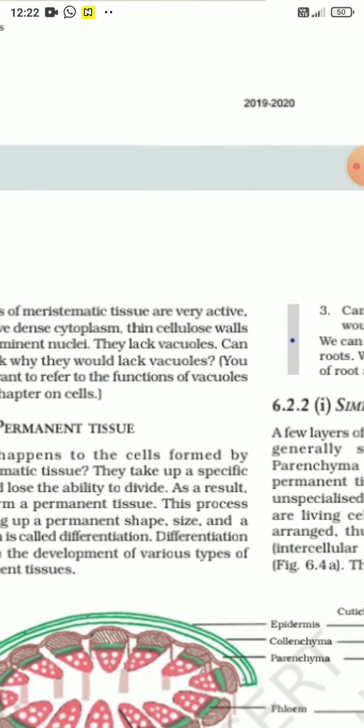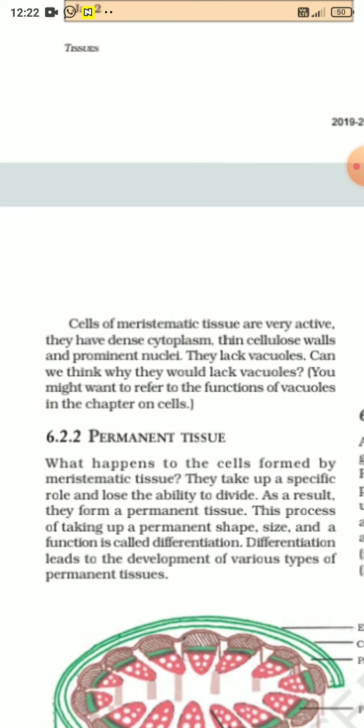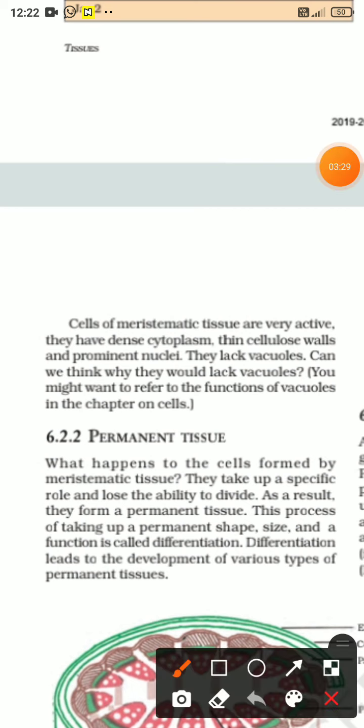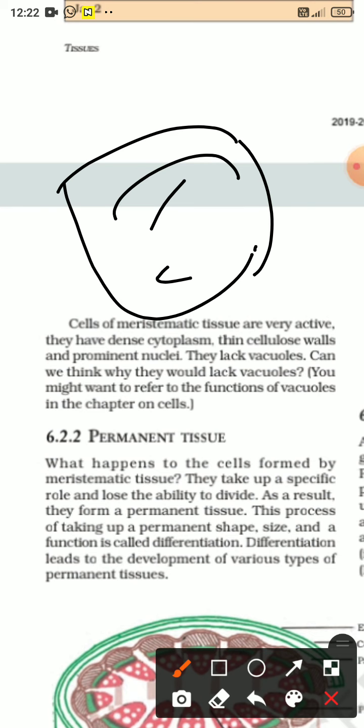Why are meristematic tissues very active? These young cells in different parts have dense cytoplasm. They lack vacuoles. They lack rigidity. Why would they lack vacuoles? Because they don't need rigidity and they don't want to store their food because they are responsible for growth. So I think you understood well, thank you.